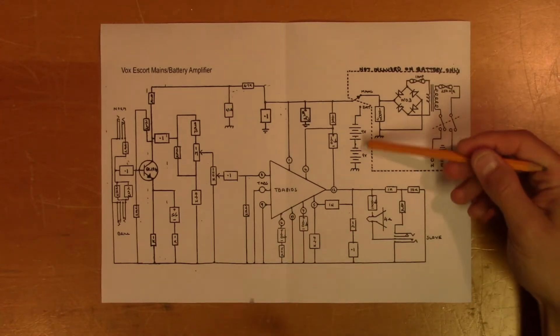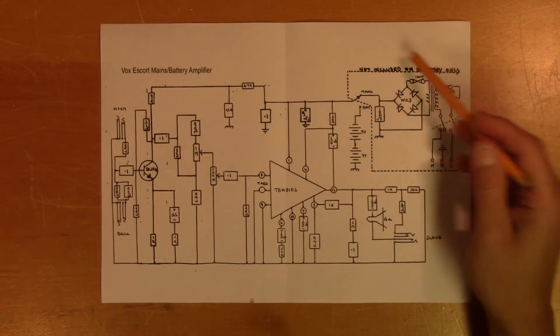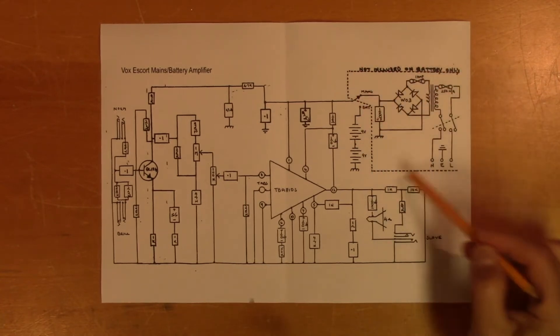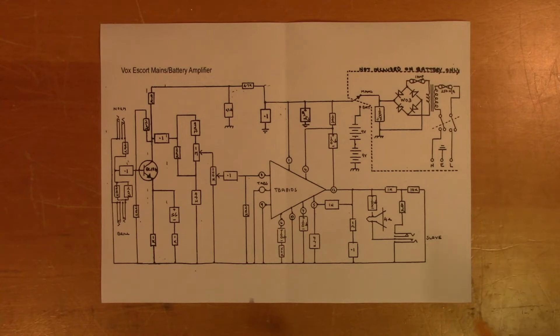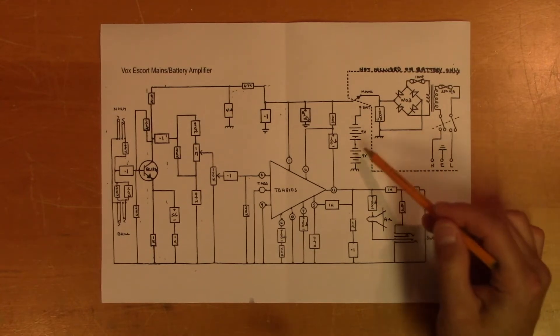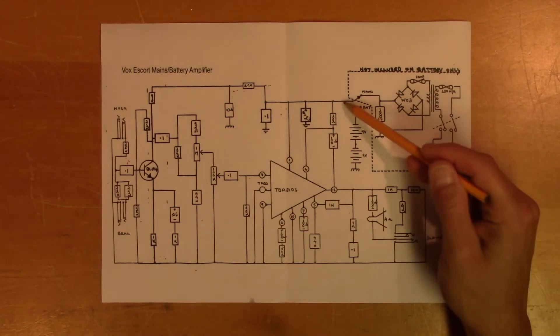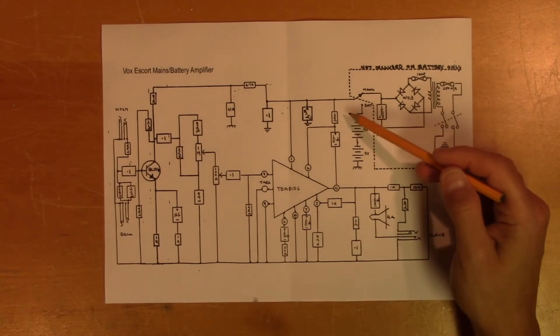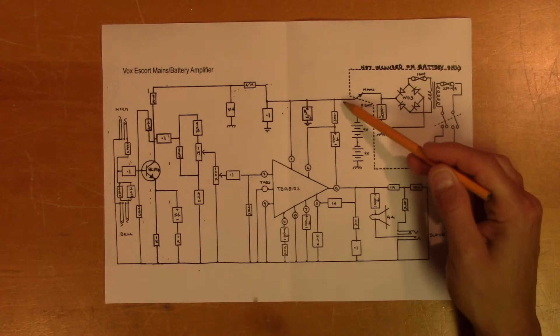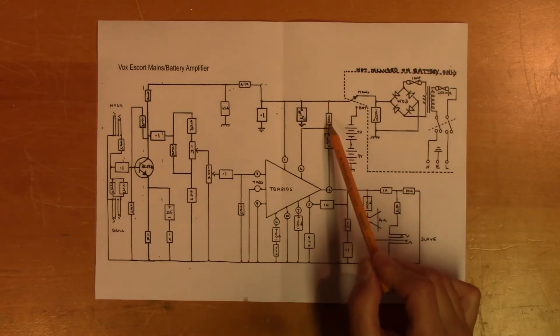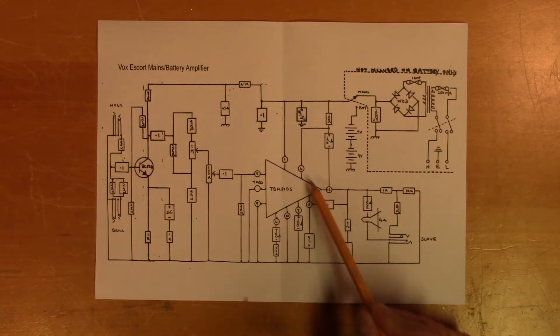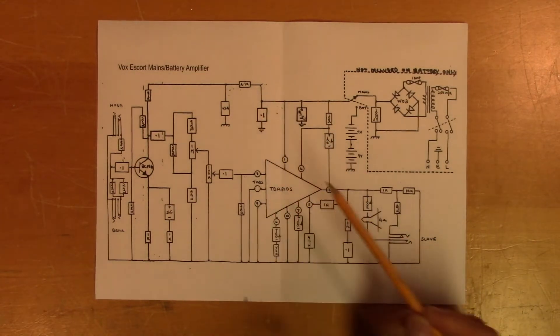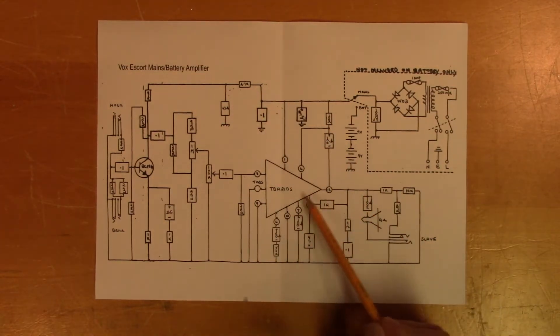So this unit is powered using two 9-volt batteries. There is also a version that has a built-in power supply, which this one does not have. What we're seeing is that the current draw is way too high. When measuring the resistance between this power rail and ground, we get a very low value, which indicates that some component connected to the power rail is faulty. I've detached and measured the resistance of all of these components, except this one, and they all seem to be fine. So I'm guessing that the TBA810S is the one that is faulty. Let's remove it and measure it out of circuit.